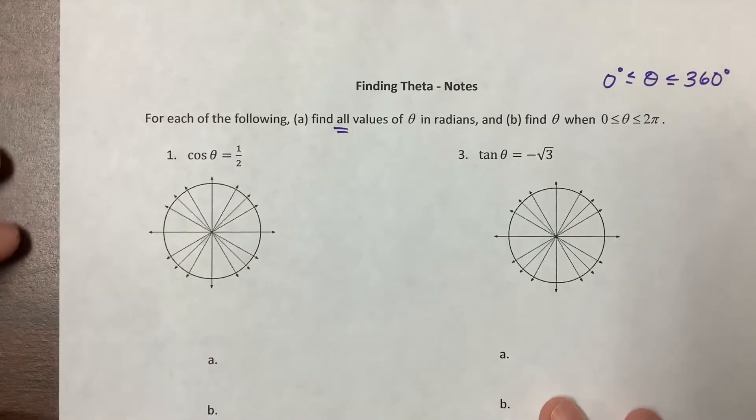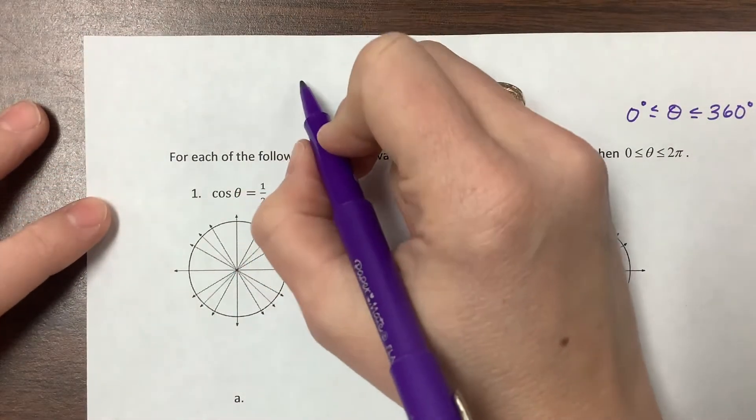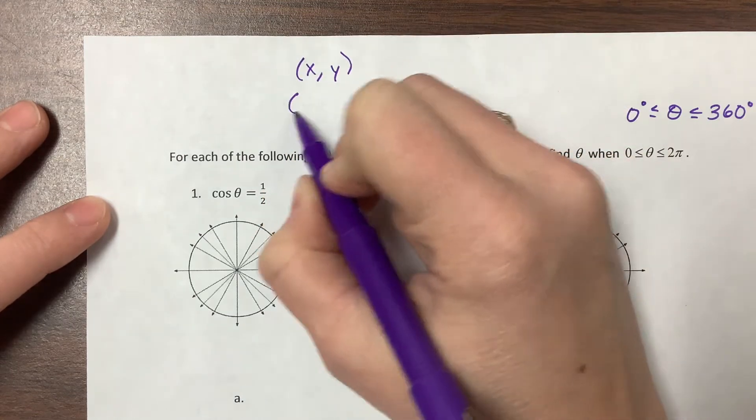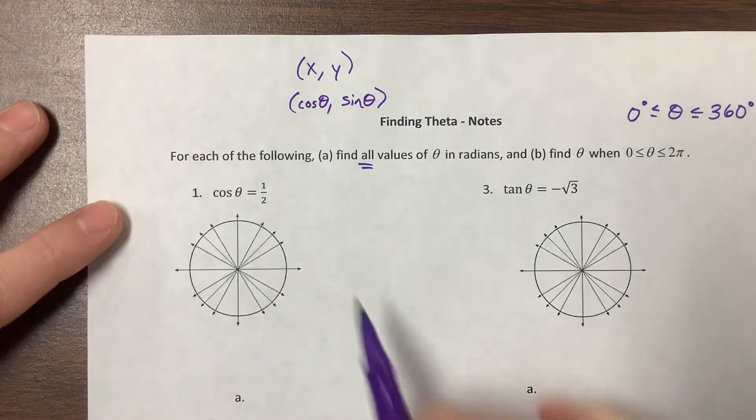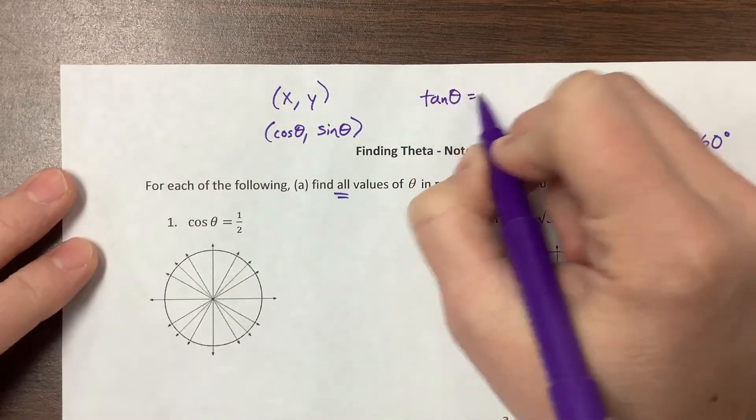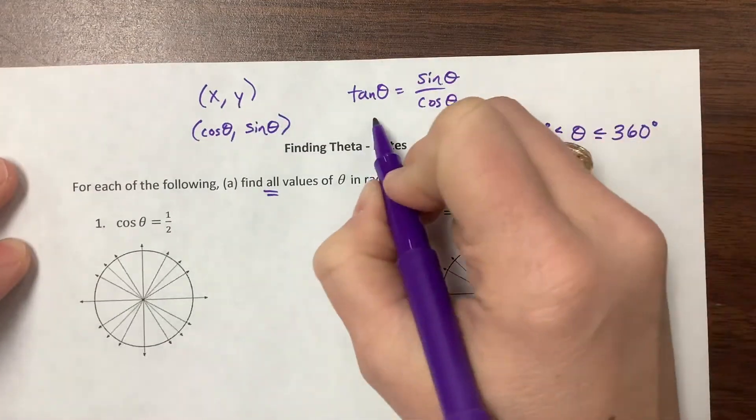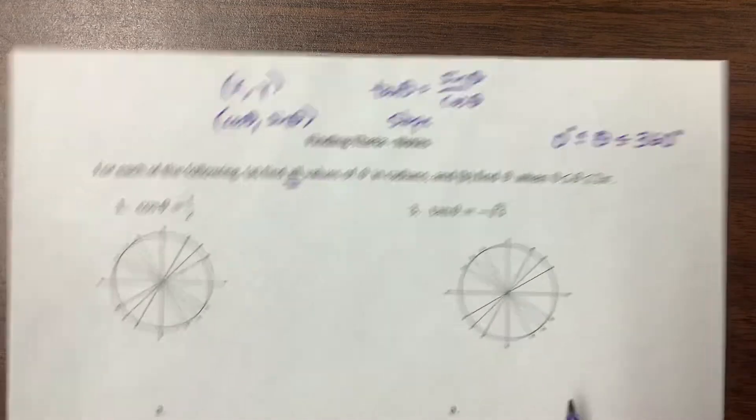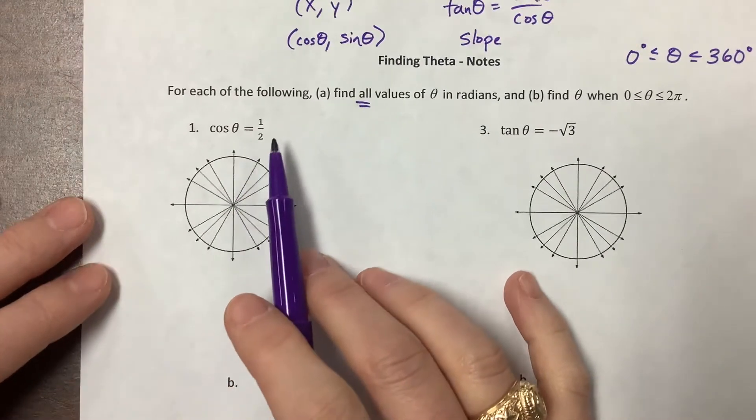So the unit circle, we predominantly do with radians. We already know from our unit circle that we find the x and y coordinates, and that the x coordinate is cosine of theta, and the y coordinate is sine of theta. We also know that tangent of theta is sine over cosine, and it's also, or in other words, it's the slope of that line. We walk in knowing a lot at this point. So the first one here, they say cosine of theta is equal to one-half.